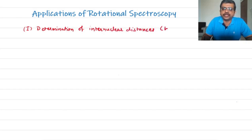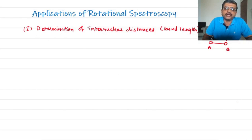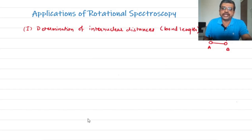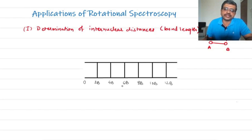Internuclear distances are also called bond lengths. For a diatomic molecule consisting of atoms A and B, the distance between their nuclei is the bond length of that molecule. Rotational spectroscopy can be used for determining these internuclear distances or bond lengths. The lines in the rotational spectrum appear at 2B, 4B, 6B, 8B, and so on, as seen in the last lecture.